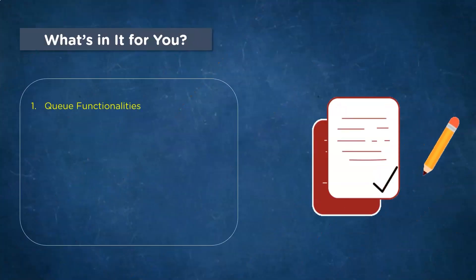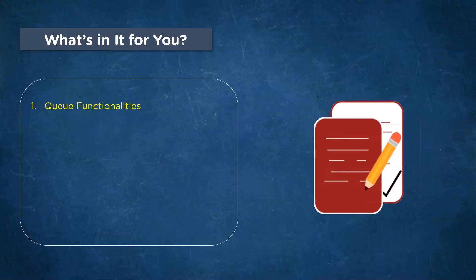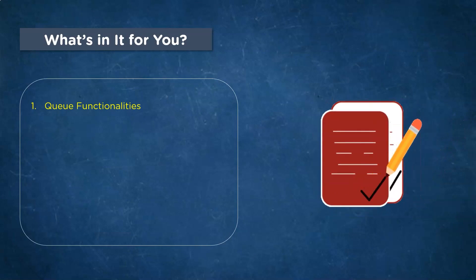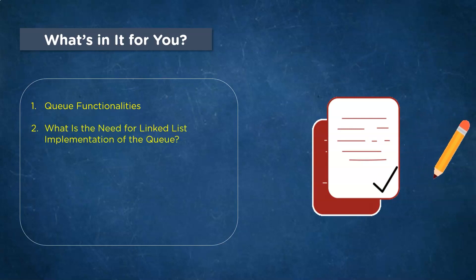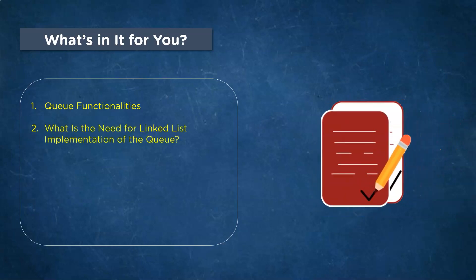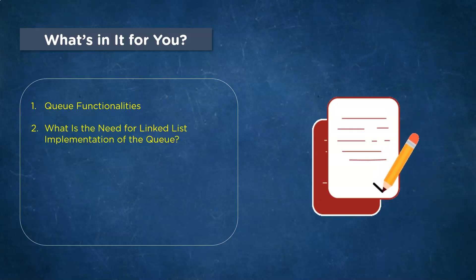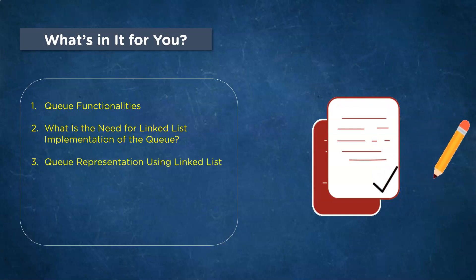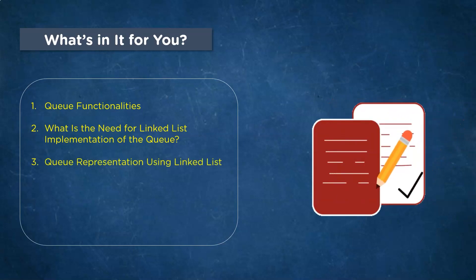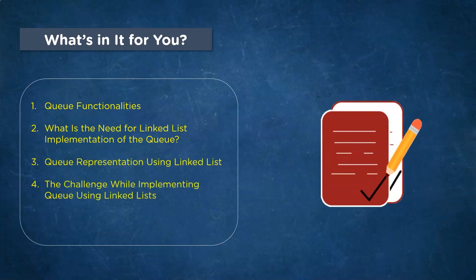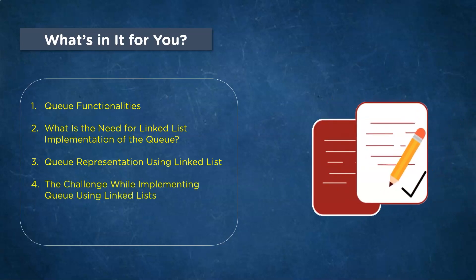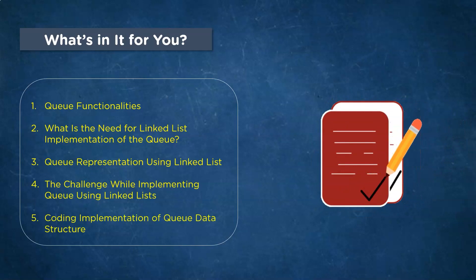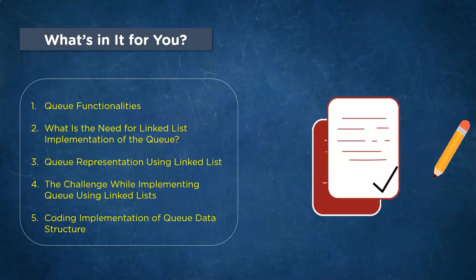First, we will quickly revisit the queue functionalities covered in previous sessions. Followed by that, we will understand the need for linked list implementation of queue. Advancing ahead, we will deal with representation of queue using linked list and the challenges that occur while implementing queue using linked list. Finally, we will cover the coding implementation of queue data structure.